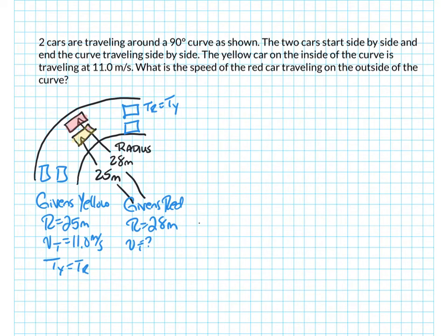Let's start with the yellow car. I'm going to use my equation that says the tangential velocity is equal to 2 pi r over t, and therefore t is equal to 2 pi r divided by the tangential velocity of the yellow car. So my time, my numbers, is going to be 2 pi radius for the yellow car, 25 meters, divided by the velocity for the yellow car, which is 11 meters per second.